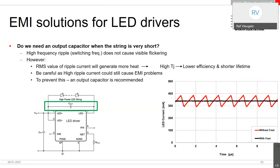The output capacitor also reduces the RMS heat generated in the LED junction. Even though the average current — and therefore average light output — remains the same, the AC ripple component generates additional heat. With a larger output capacitor you get less ripple — the human eye won't perceive the difference, but junction temperature and lifetime are improved. The graph shows that the ripple current in the red curve versus the smooth black curve produces the same average brightness but noticeably more heat.